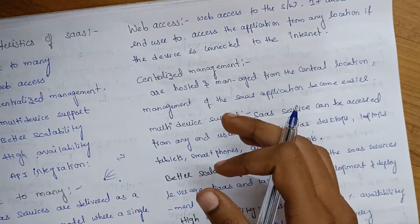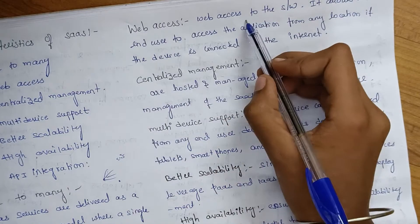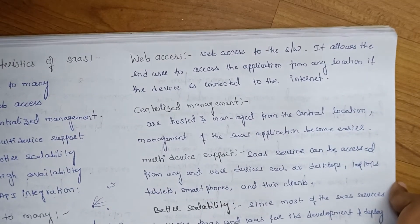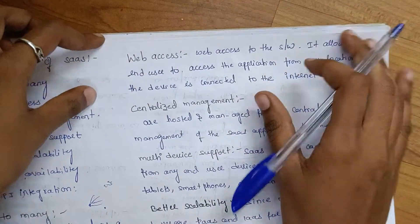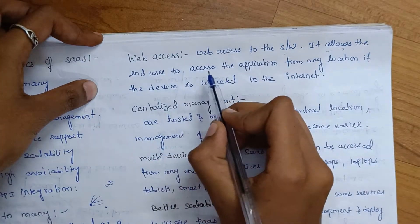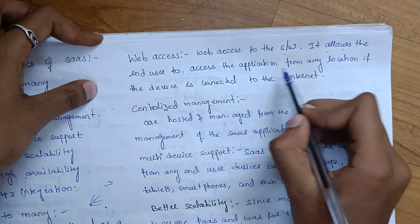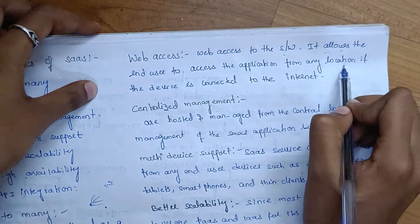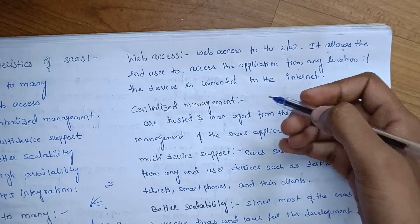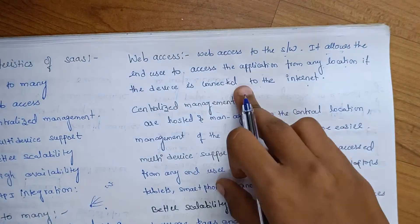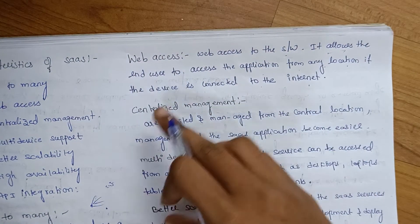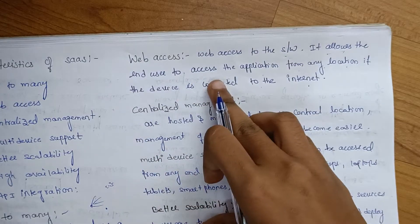Web access means access via the internet. It allows end users to access the application from any location as long as their device is connected to the internet. End users access SaaS applications simply using the internet.